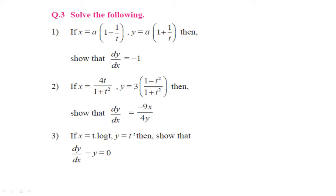The next example is also given: if x is equal to 4t upon 1 plus t square, and y is equal to 3 into bracket 1 minus t square upon 1 plus t square, we have to show that dy by dx is equal to minus 9x upon 4y. Similarly, another example is given: x is equal to t into log t, y is equal to t raised to t, and we have to show that dy by dx minus y is equal to 0. Today we will complete question number 3.